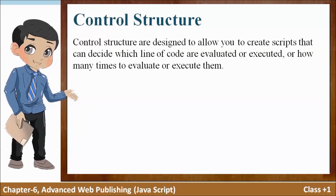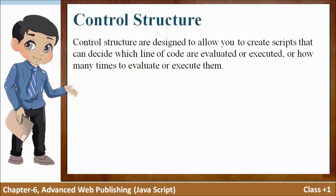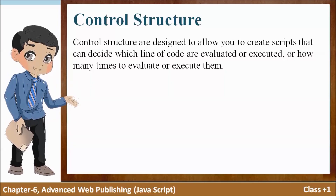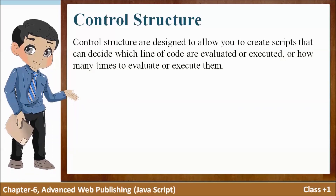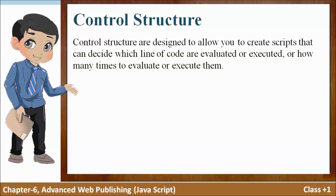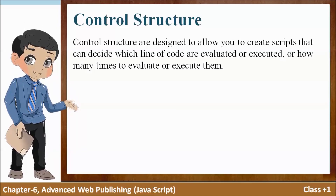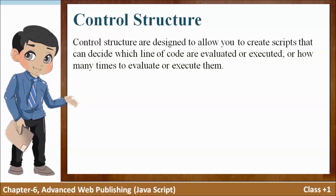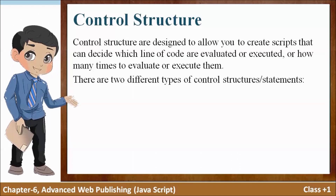Control structures are designed to allow you to create scripts that can decide which lines of code are evaluated or executed, or how many times to evaluate or execute them. Control structure aapko script banane ki anumati dene ke liye design ki gayi hai jo decide kar sakti hai ki koun se code ki lines ka mulyankan karna hai ya chalana hai ya unhein kitni baar chalana hai.